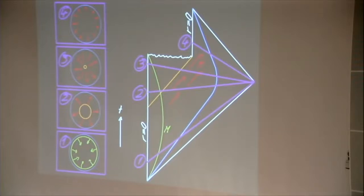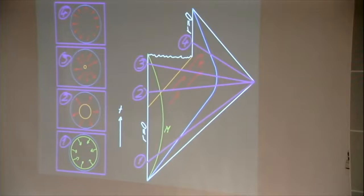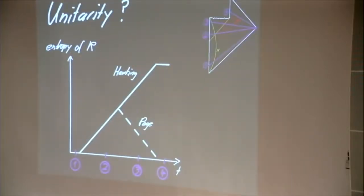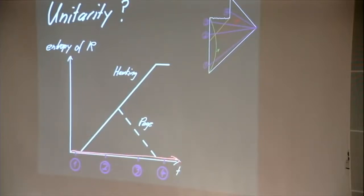We can in principle do this experiment, and the question people are asking is: is this whole process unitary? If it was unitary, we would expect that if the green matter was in a pure state, then the whole radiation detected and stored in quantum memory would still be in a pure state — that would be an indication of unitarity. To make this more quantitative, we can picture the entropy of the radiation depending on time. In this diagram, time goes to the right. Before the black hole was generated, there is clearly no radiation, so the entropy shown on the vertical axis is zero.